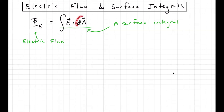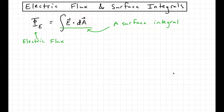What dA represents here is a little infinitesimal part of that surface. A represents area, so you take a tiny bit of the surface area. I'm going to talk about how you can have an area be a vector in a bit. You dot it with the electric field that exists at that part of the surface, and then you add up all those contributions over an entire surface. This is a different kind of integral expression than any we've seen before.